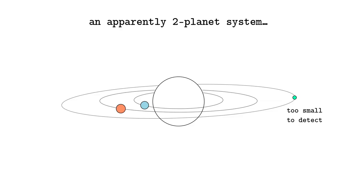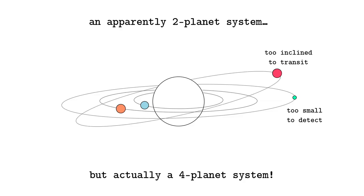Some other planets are just unfortunately misaligned — meaning that even if we detect one transiting planet, if there's another whose orbit is tilted, we won't necessarily see it. And that means the mutual inclinations between planets, whether they tend to be lined up in a nice flat plane or tend to have those tilts, will also influence the multiplicities we measure.